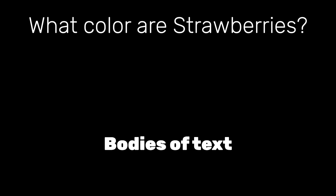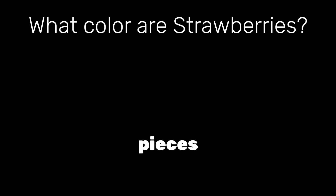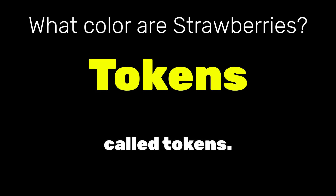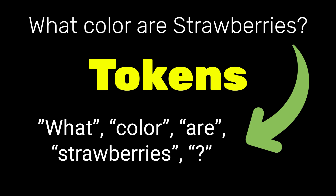Bodies of text are broken down into smaller pieces called tokens. These tokens can be as small as a single character, a part of a word, or even whole words, depending on the language model.